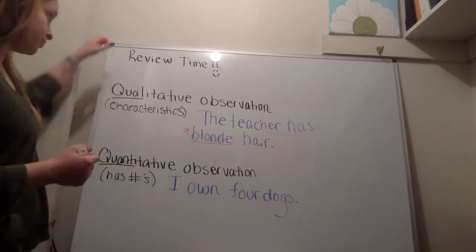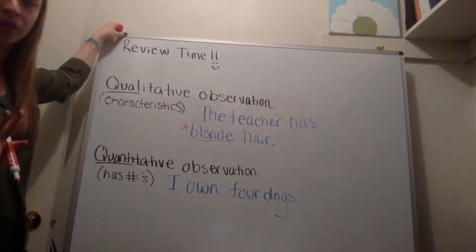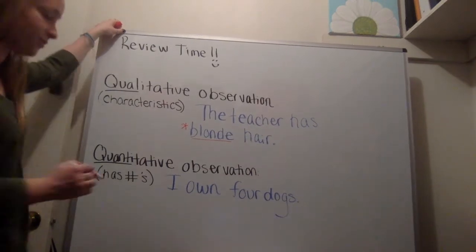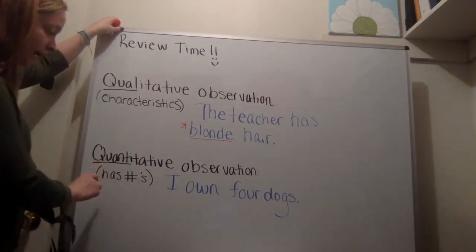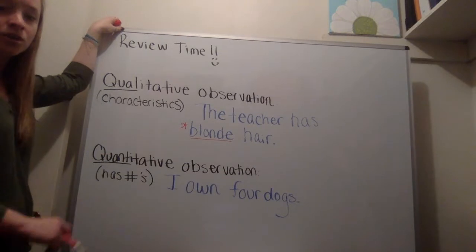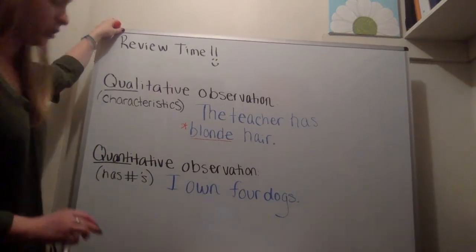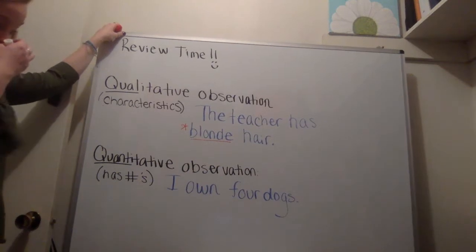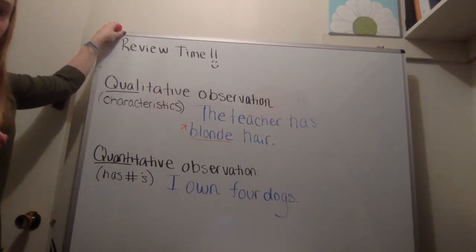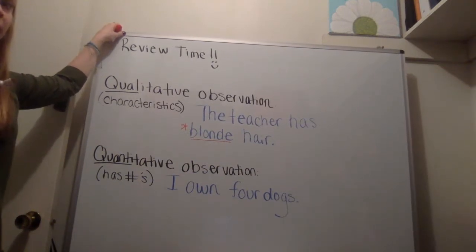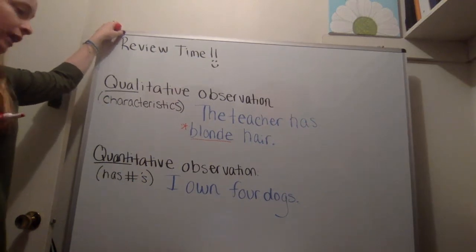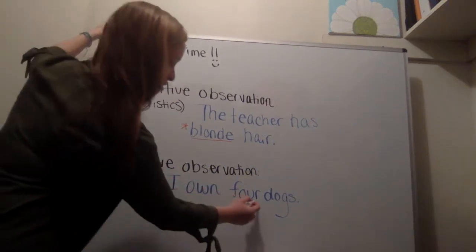And then quantitative, I feel like everybody had a pretty easy time with this. Quantitative, and I underlined quantity, has numbers. So yes, I used a little hashtag, but that's my shorthand for numbers. So it has to have some type of number, either in written form. So I am going to cheat on this one.